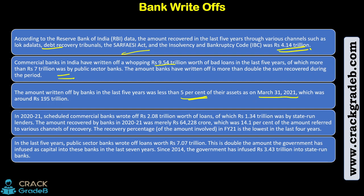Looking at the percentage, 5% is actually very small — out of Rs 100 of assets, they have just written off Rs 5. The scheduled commercial banks wrote off Rs 2.08 trillion worth of loans, with Rs 1.34 trillion by distressed lenders. We have put all the data so you can take a screenshot or pause and read it. Let's move forward.